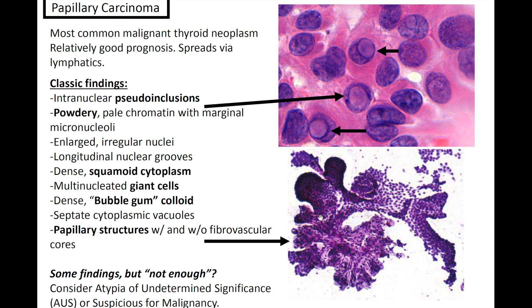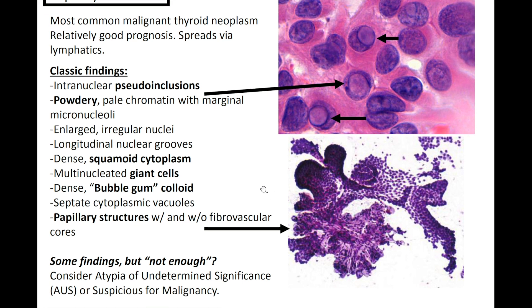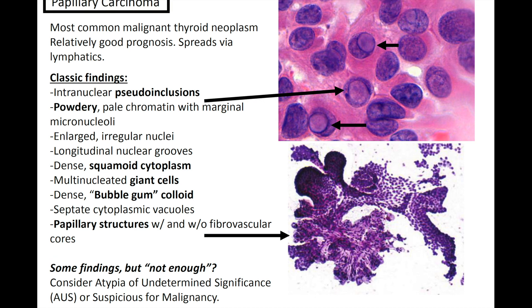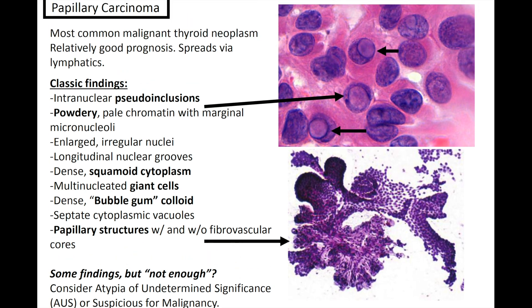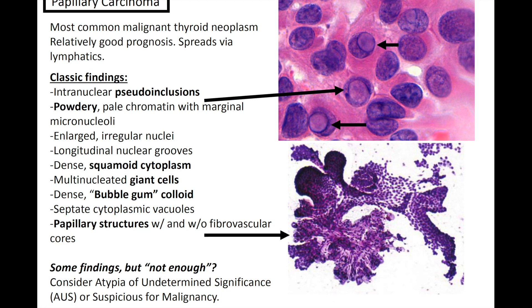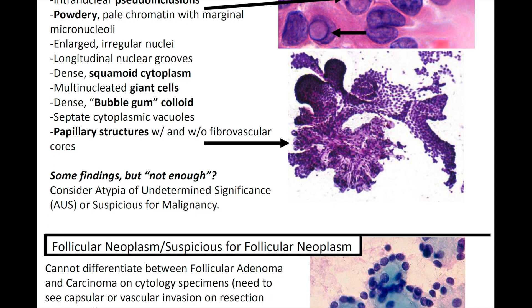Architecturally, you can often have papillary structures with and without fibrovascular cores — so papillary thyroid carcinoma, it would make sense that we're going to see papillary architecture. And if you have some of the findings of PTC but not enough to reach a diagnosis of papillary carcinoma, consider AUS, or atypia of undetermined significance, or suspicious for malignancy.